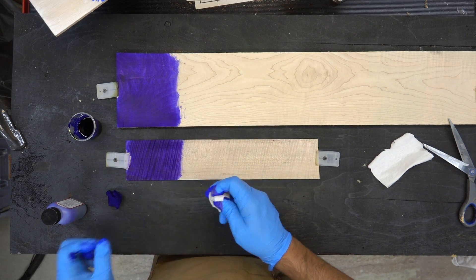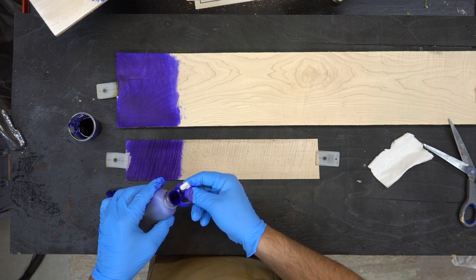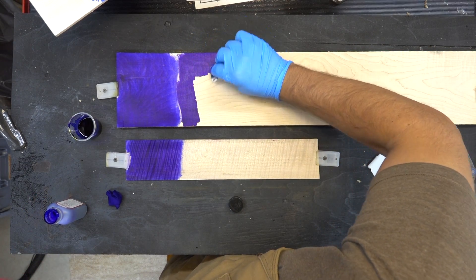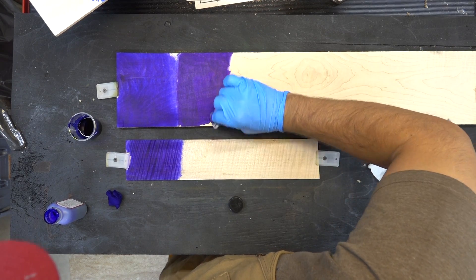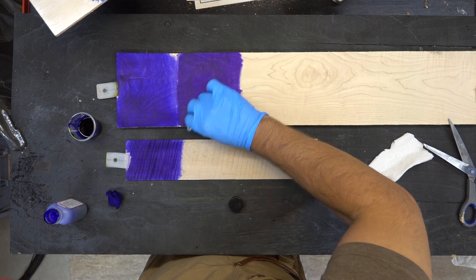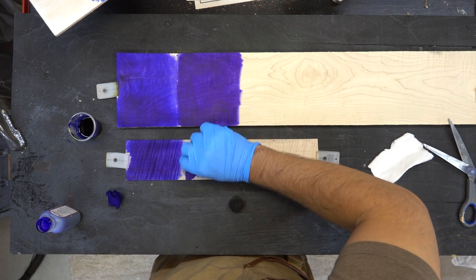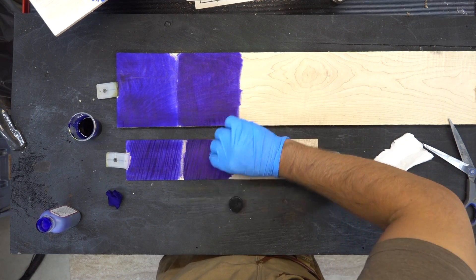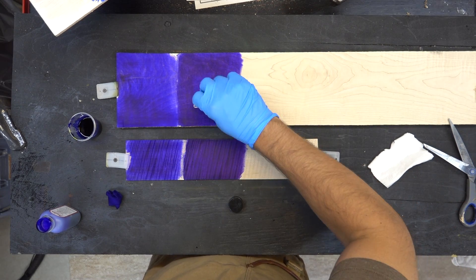So that is the 50-50 mix and now we'll go straight out of the bottle. When I dilute it, it actually looks a little blue. I'll put one more coat up on top here.